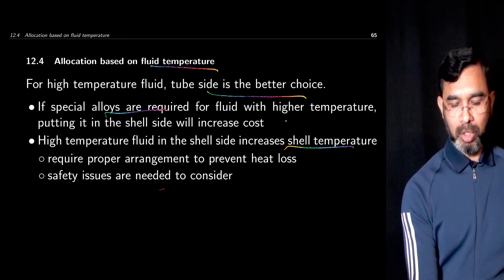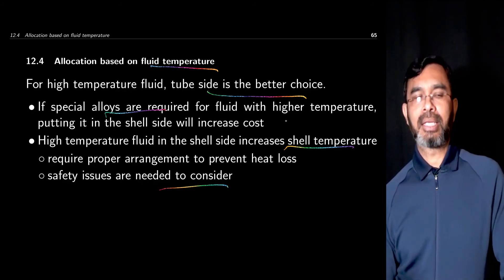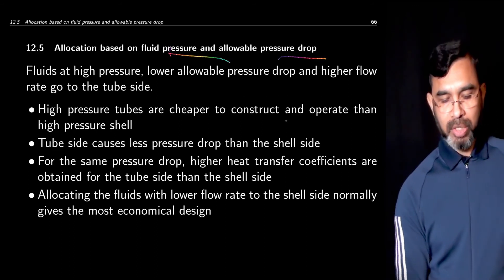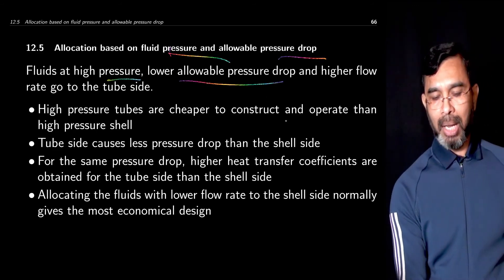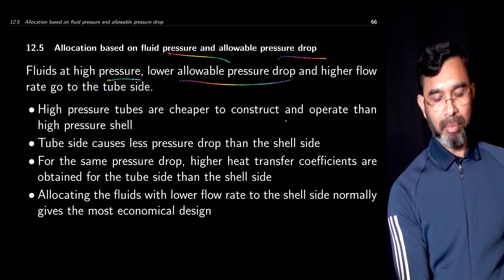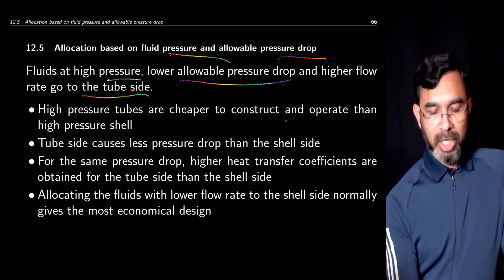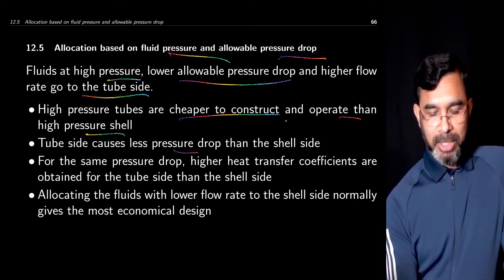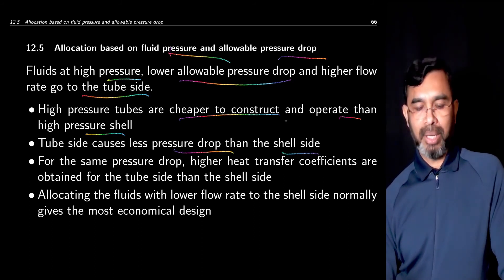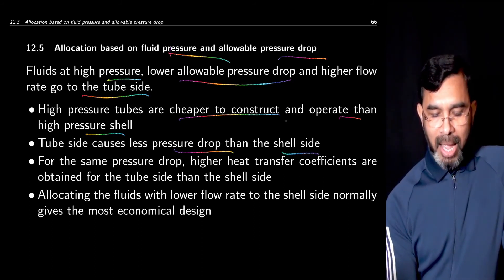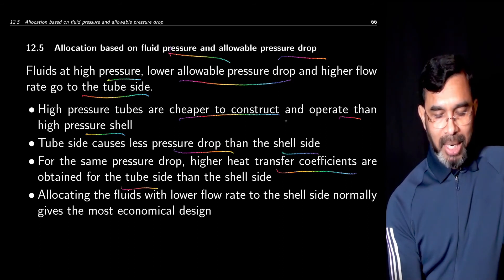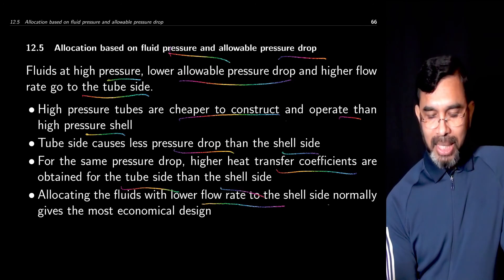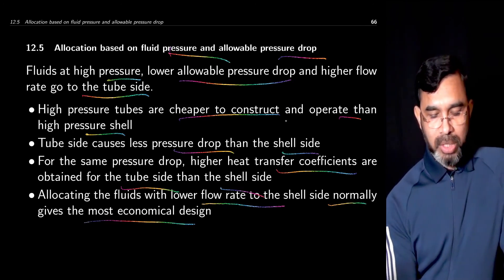Safety issues also need to be considered when the shell side is exposed to high temperature. Based on fluid pressure and allowable pressure drop, fluid at high pressure, with lower allowable pressure drop and higher flow rate, goes to the tube side, because high pressure tubes are cheaper to construct and operate than a high pressure shell. The tube side also causes less pressure drop than the shell side, and for the same pressure, higher heat transfer coefficients are obtained on the tube side. Allocating fluids with lower flow rate to the shell side normally gives the most economical design.